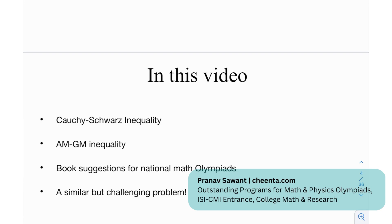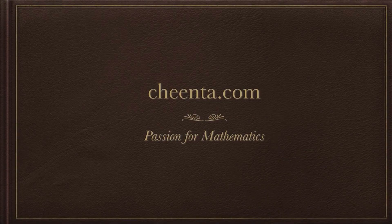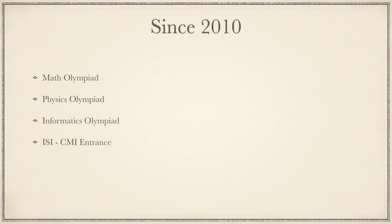In this video we're going to be seeing the Cauchy-Schwarz inequality, which is going to be the takeaway of the video, then the AM-GM inequality, then we have the book sessions for national math olympiads, and at the end a challenging problem. This video is sponsored by Chinta.com. Since 2010, Chinta has trained thousands of students from all around the world in mathematical olympiads, physics olympiads, computer science and informatics olympiads, ISI, CMI entrances and research projects for school and college students.